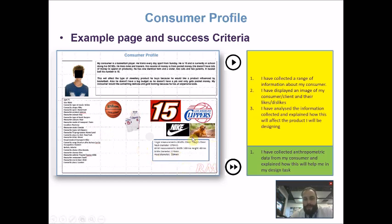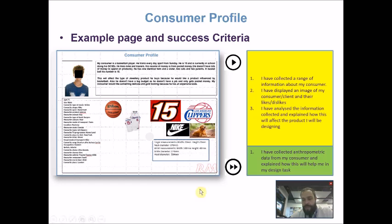In addition to the other information, we can also collect anthropometric data from our consumer. This can be quite important, specifically if we're designing for one particular consumer. We want to make sure the product is ergonomic so it fits them, is safe and easy to use, and is comfortable — the general criteria for ergonomic products. We get their human measurements so we can make the product to fit them well.